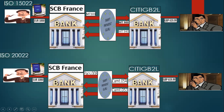Then the bank sends out the traditional MT103 message, and the receiver bank receives it via the SWIFT network. The receiver bank — in this case CitiGB2L — does the necessary validation and then sends out the debit advice, which is MT900, to SV France, indicating the certain amount has been debited. At end of day they also send out the MT940, which is the end-of-day account statement report used by banks for reconciliation.